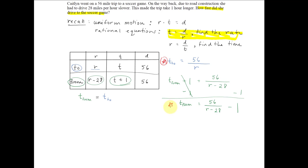So the time it took to get t from the soccer game is 56 divided by r minus 28 minus 1